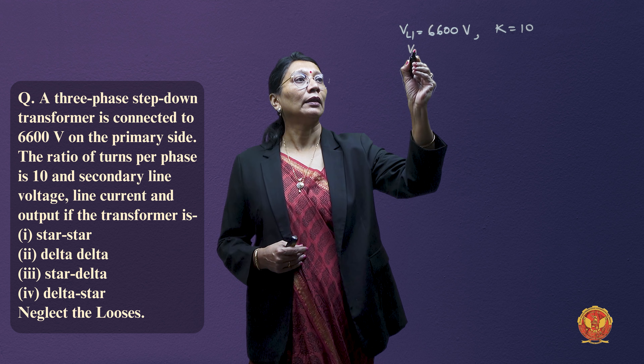We have to find these values for four combinations: star-star, delta-delta, star-delta, and delta-star. In all cases, we have to find the transformer secondary line voltage and line current. The condition given is that we neglect the losses, so EMF and voltage are the same.